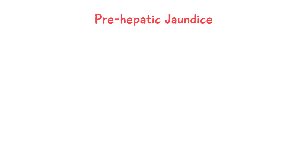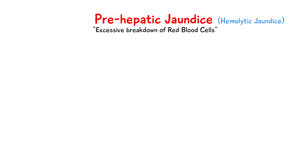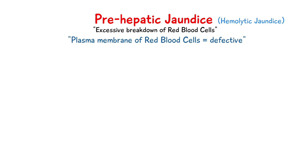Pre-hepatic jaundice is due to a lot of breakdown of the red blood cells, which contain hemoglobin — the source of bilirubin. That's why this type of jaundice is also known as hemolytic jaundice, because the plasma membrane of the red blood cells is often defective or not strong enough, so they rupture easily, causing increased levels of hemoglobin to be released and eventually broken down into bilirubin in the blood.